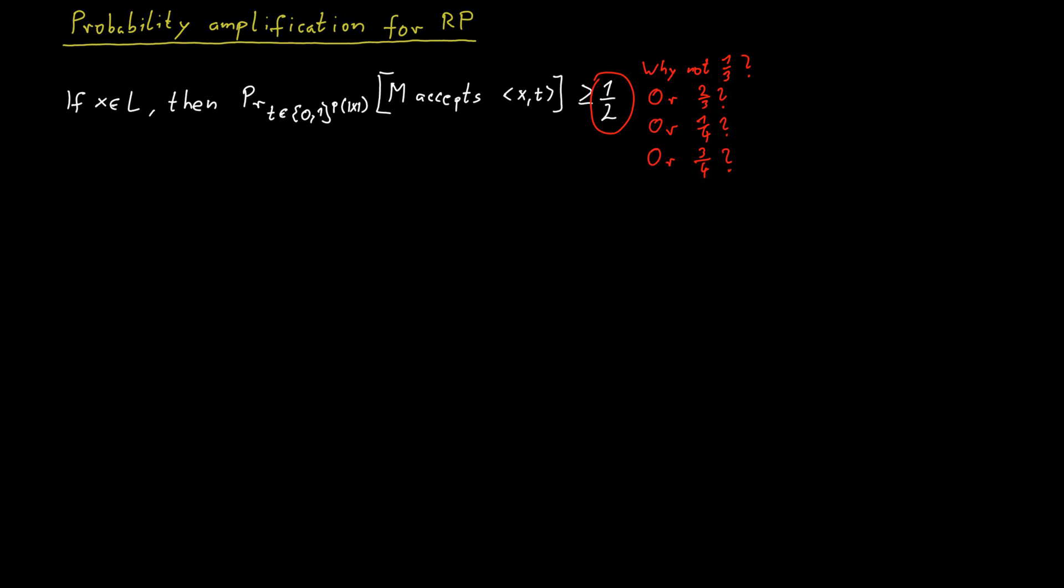And as it turns out, it really is arbitrary. You can plug in any other constant that is larger than zero, and you would get exactly the same complexity class. It would not change the complexity class at all.